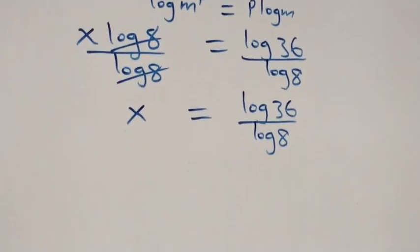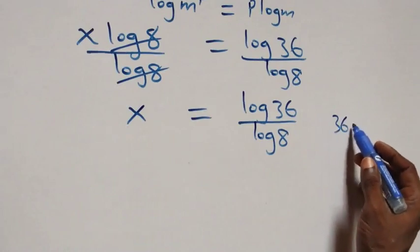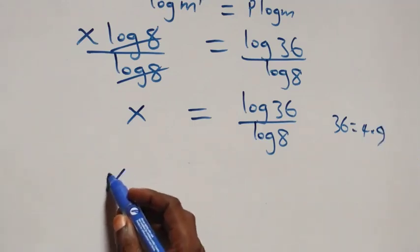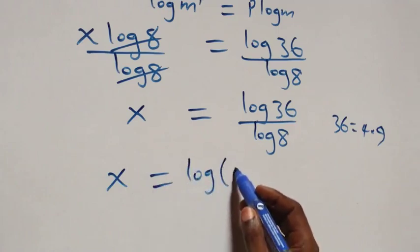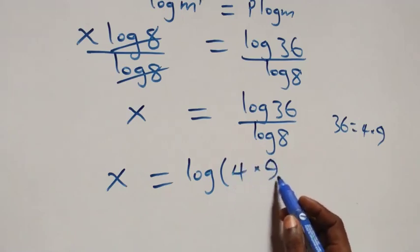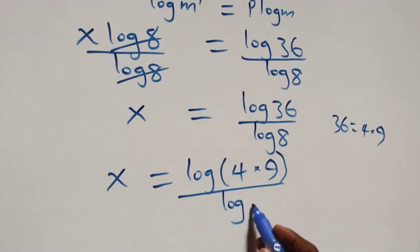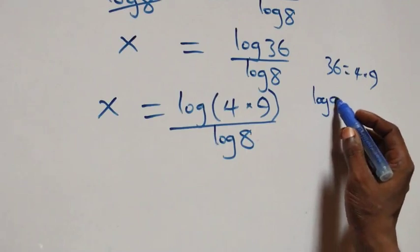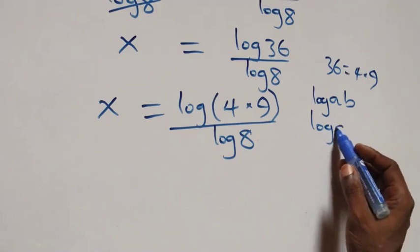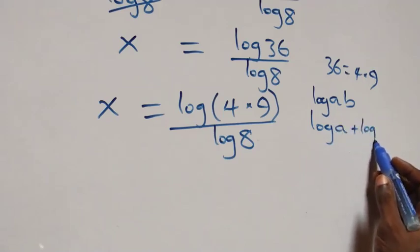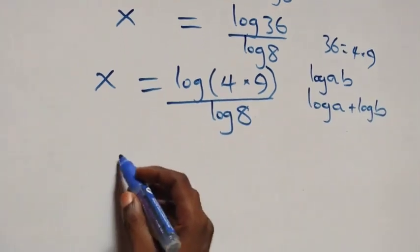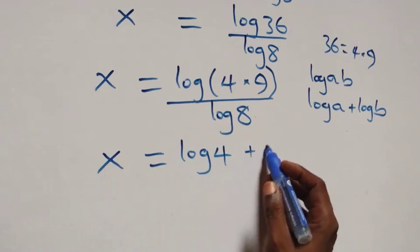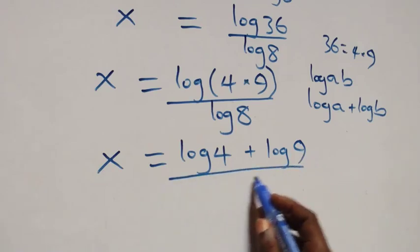The next step: we can write 36 as 4 times 9, which implies what we have here becomes x equals to log(4 times 9) over log 8. Then from the law of logarithm, when we have log(a times b), this can be written as log a plus log b. So we have x equals to log 4 plus log 9 over log 8.